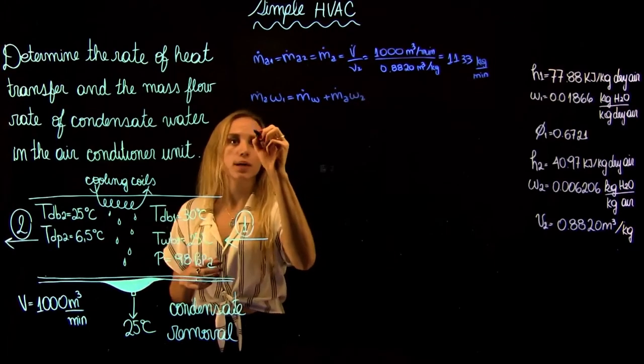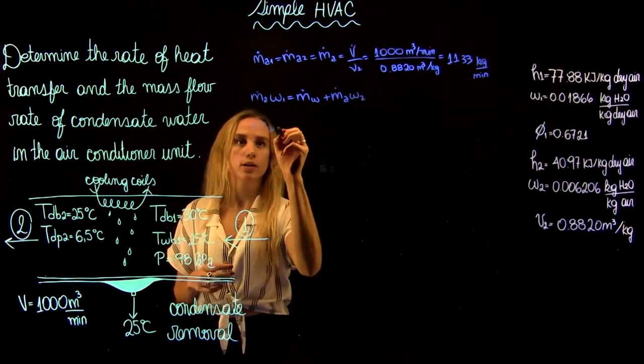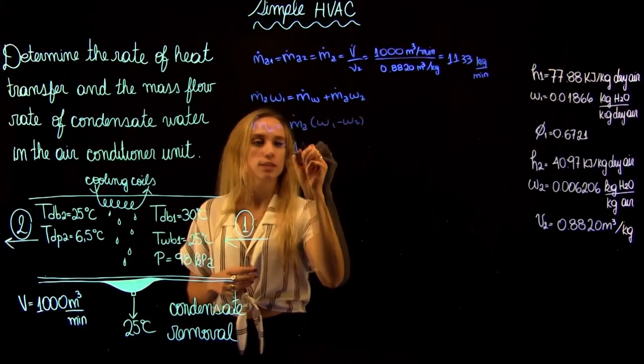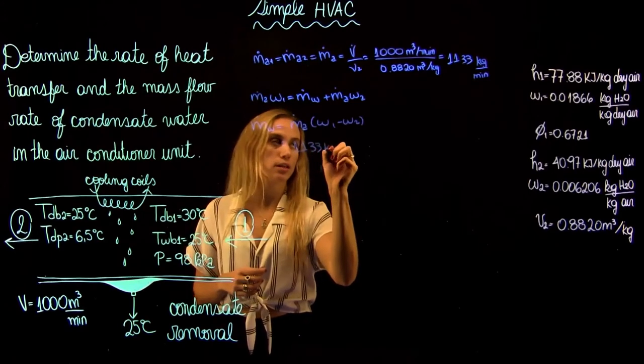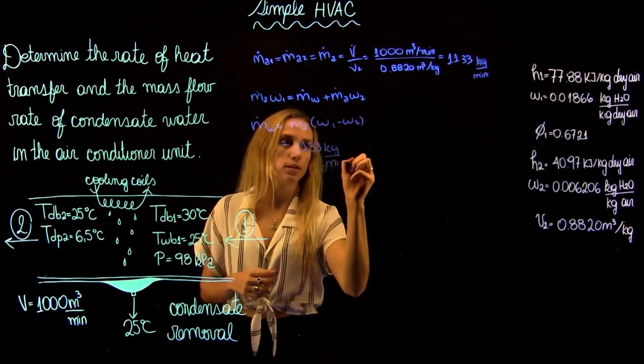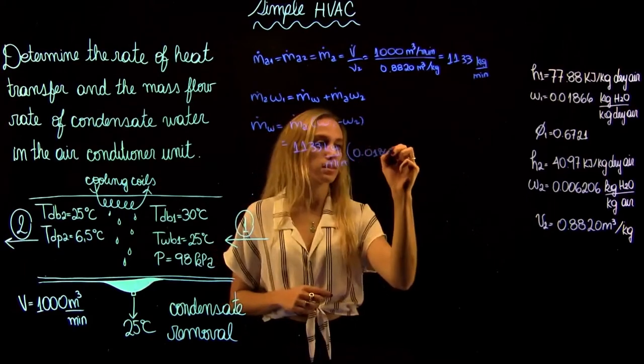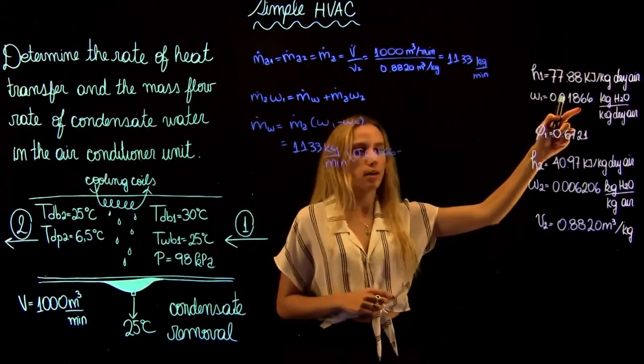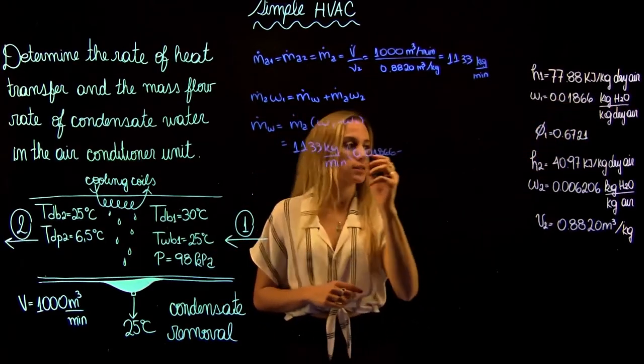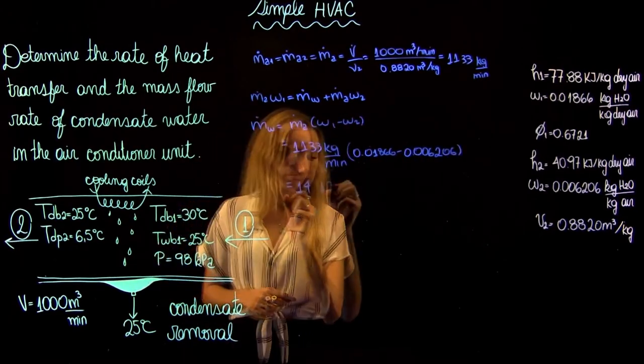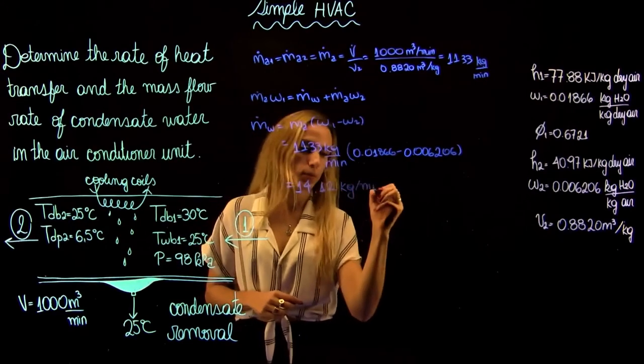For the mass flow rate of water, we can rewrite it as omega 1 minus omega 2. This we just found, so it is 1133 kilograms per minute. So this is going to be omega 1 minus omega 2, and the ratios are actually going to cancel out. We find a mass flow rate of water of 14.12 kilograms per minute.